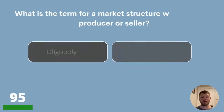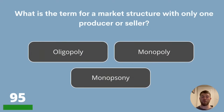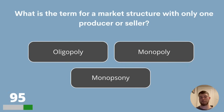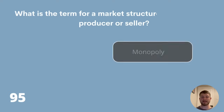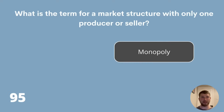Question 95. What is the term for a market structure with only one producer or seller? Oligopoly, monopoly or monopsony? The answer is monopoly.